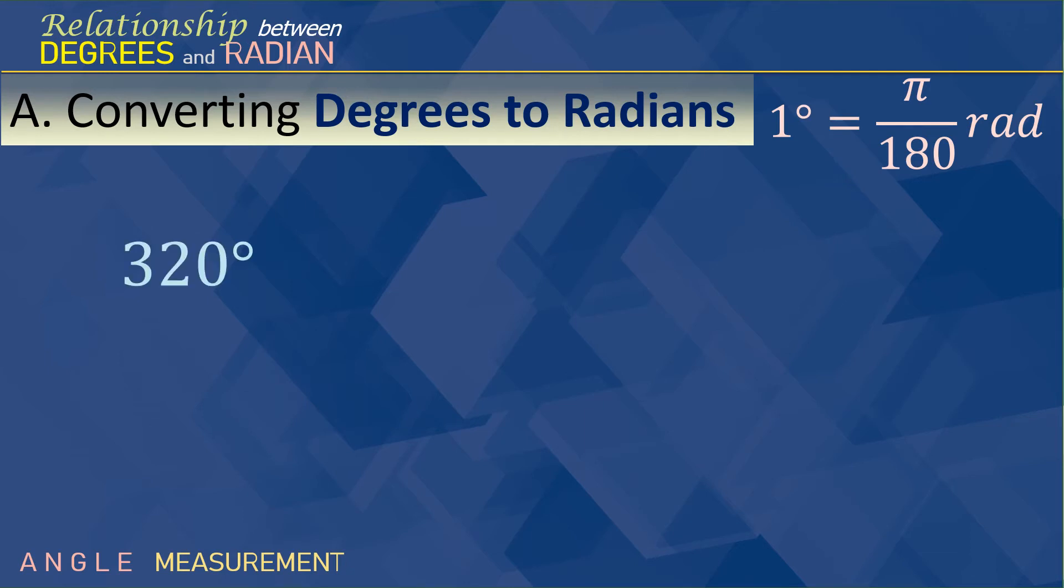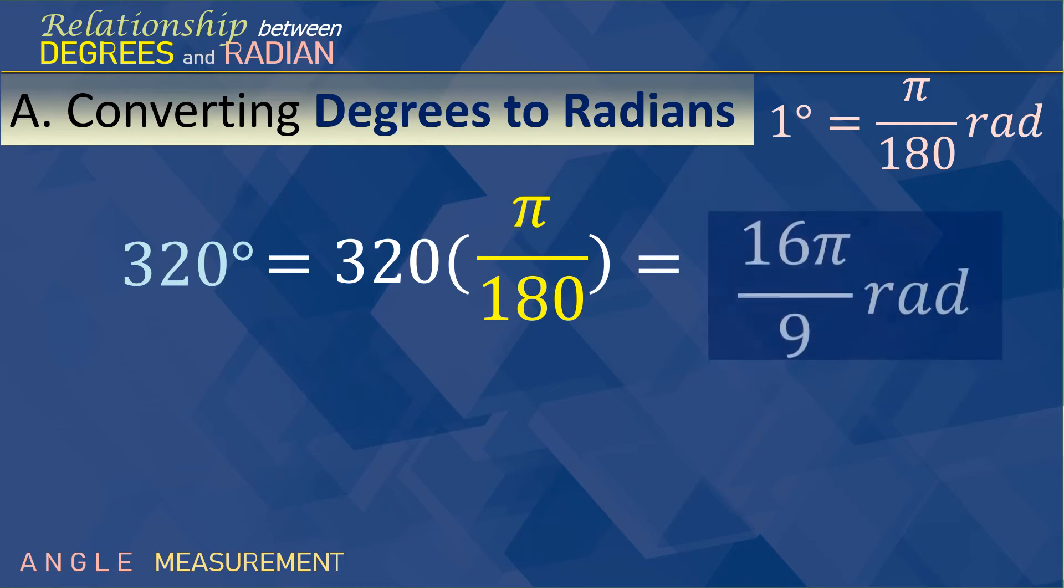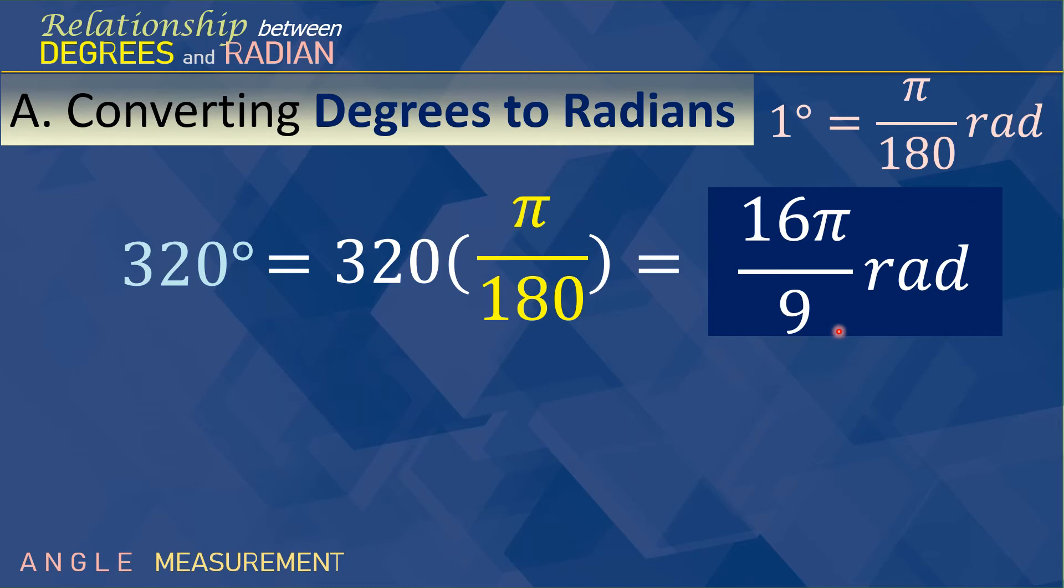Let's have number 1. So, 320 degrees is equal to 320 times pi over 180 degrees. Sorry, radians. Because we know that 1 degree is pi over 180 radians. So, we need to multiply 320 to that. Now, using your calculator immediately, the simplified answer is 16 pi over 9 radians. So, 320 degrees is actually equal to 16 pi over 9 radians.